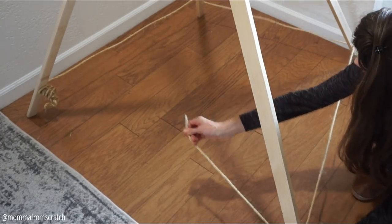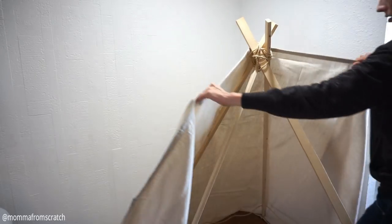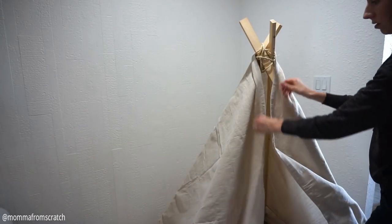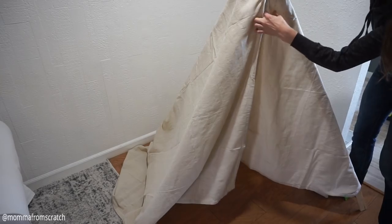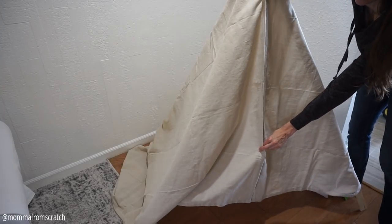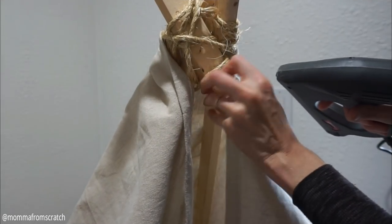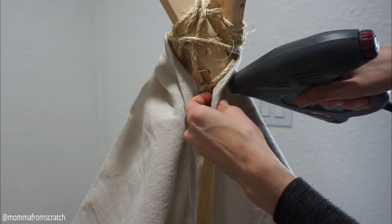Then the next step is to take your drop cloth canvas and drape that over the teepee. This is a six by nine that I am using here, and I just made sure that it was level and even in the front.